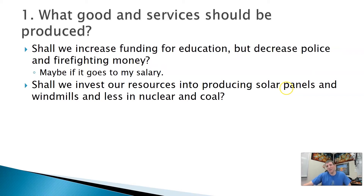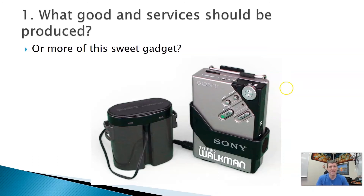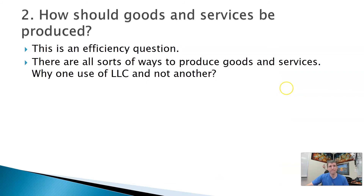You could increase funding for education. As a society, maybe we put our resources toward producing solar panels and windmills — but that means now we can't produce coal or nuclear power plants, because we used the resources to make one instead of the other. Or we can make more of that newer device right there, but that means we give up something like this — a Sony Walkman from the 1980s. Super fancy — it was battery powered, portable music, and it played cassette tapes. But obviously we're not going to put our resources into that, because if that's not what people want and they want the newer thing, we produce accordingly.